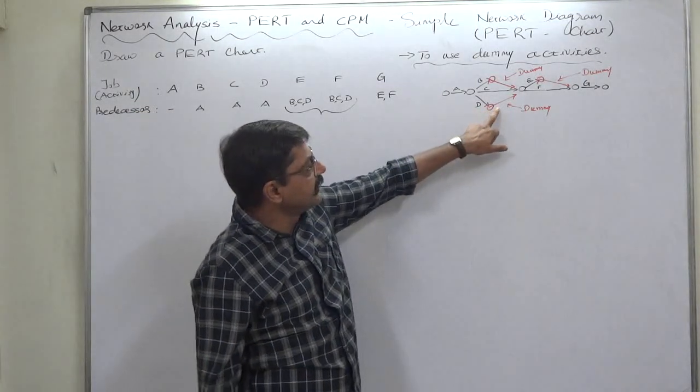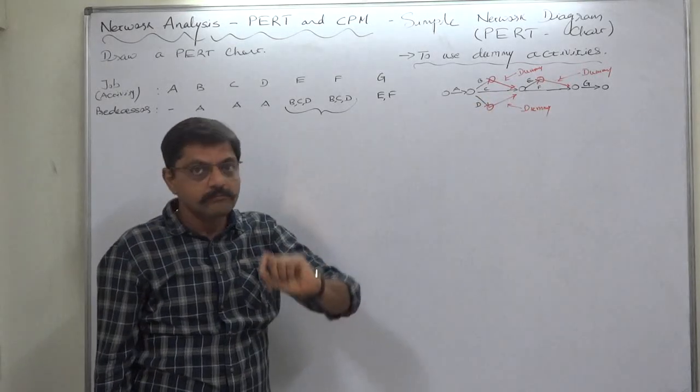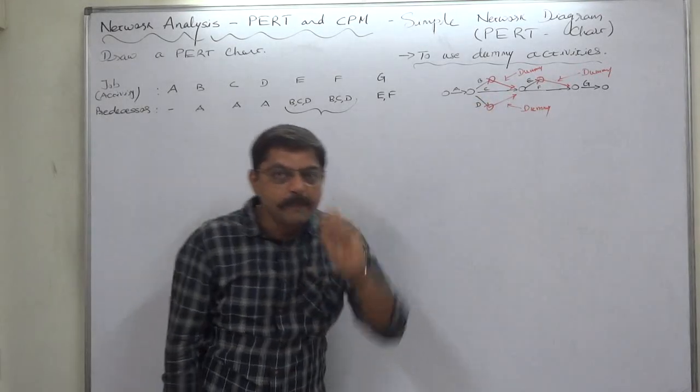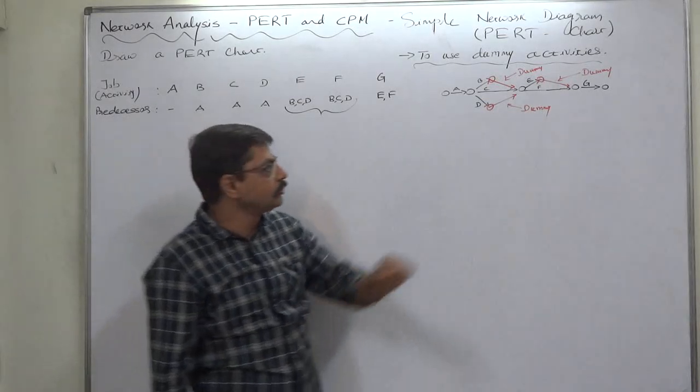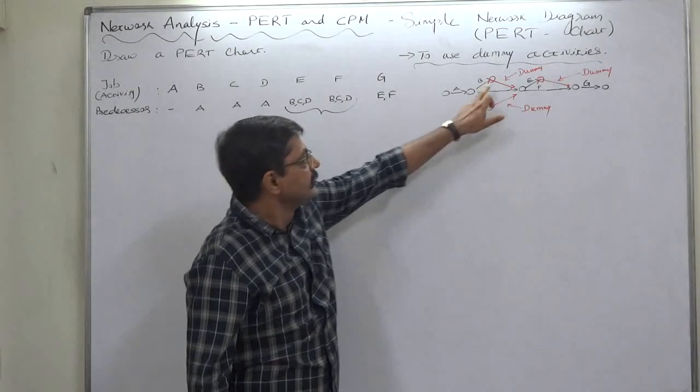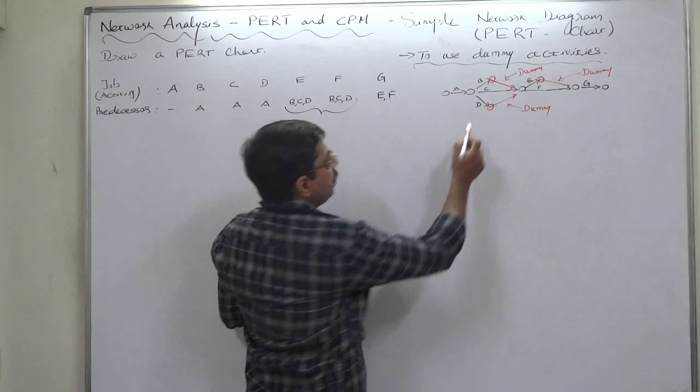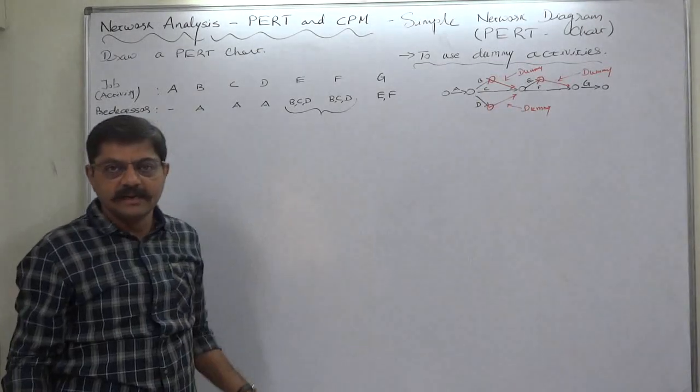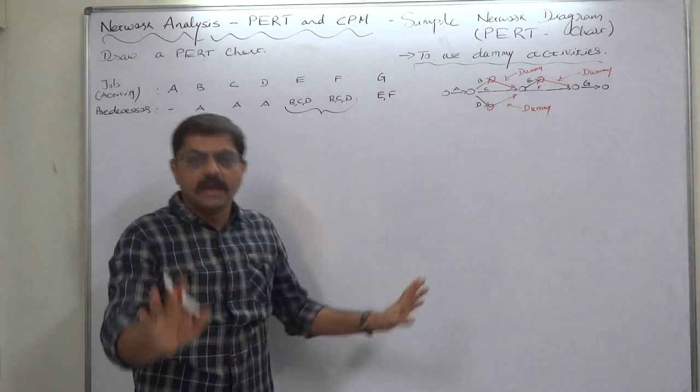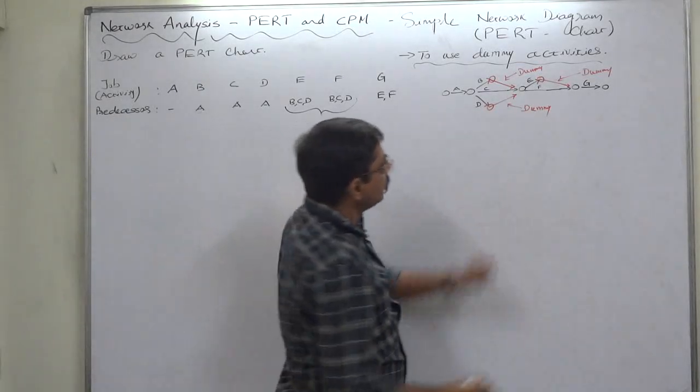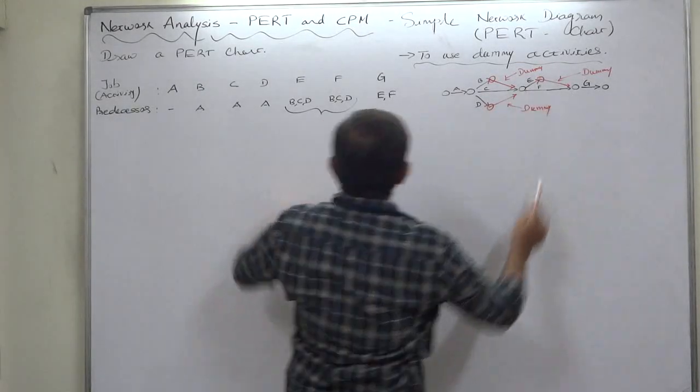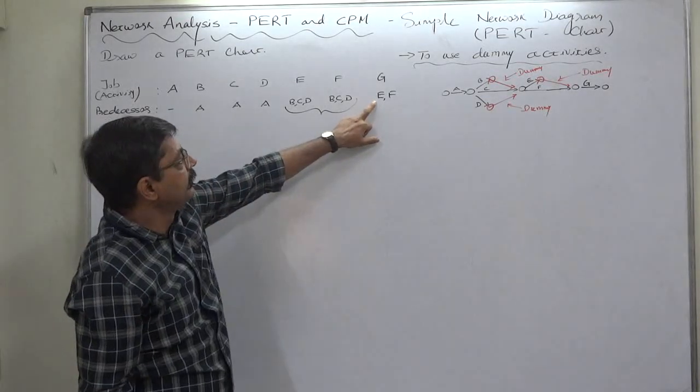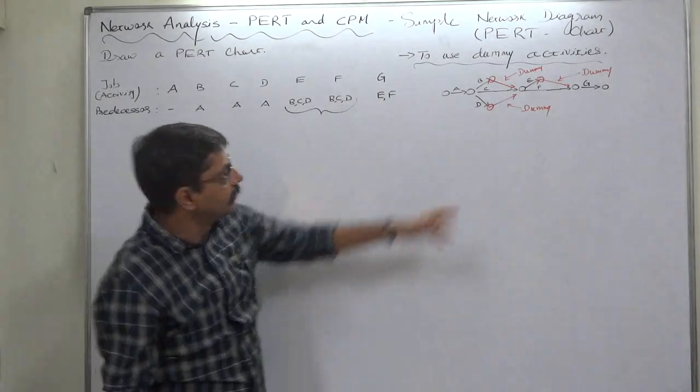To show these activities we have to use dummy. Mind well, as per rules we have to use dummy activities between B, C, and D. We cannot draw three arrows for B, C, and D directly. No, it is not allowed. You have to believe this.